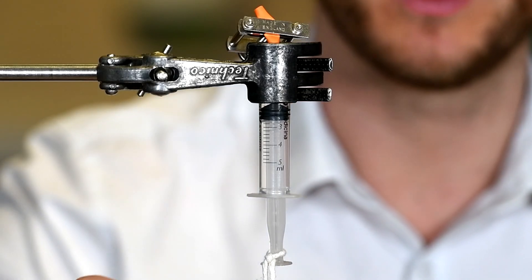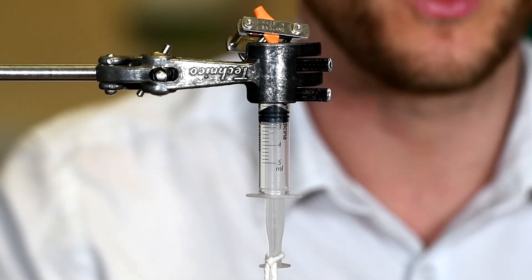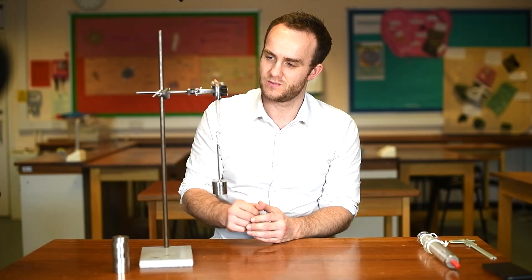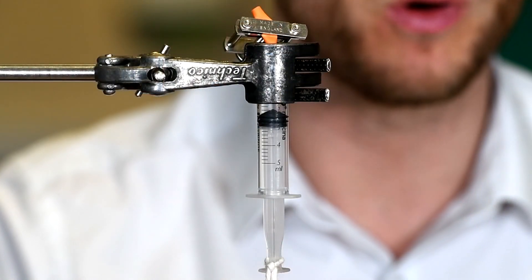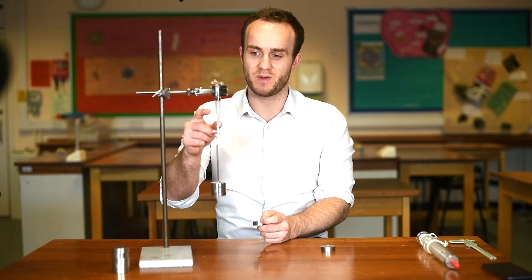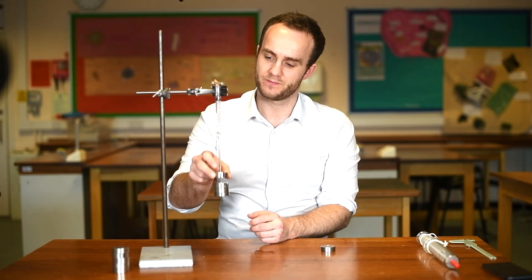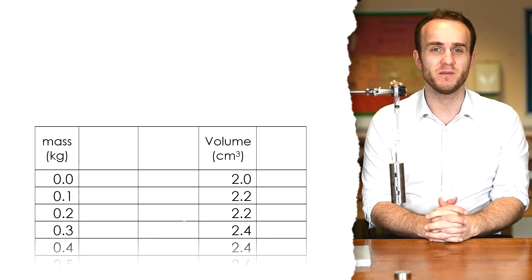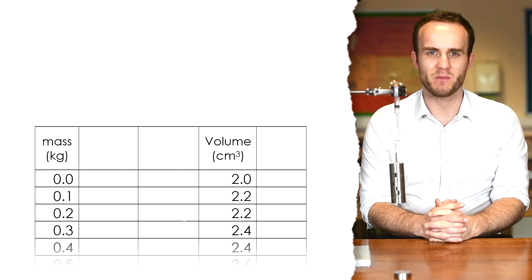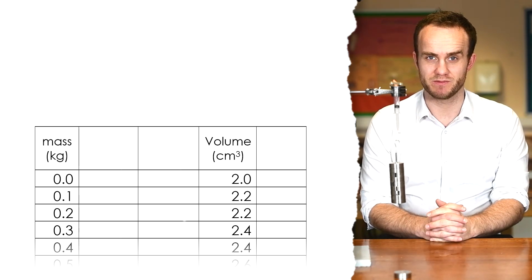Let's add another 100, so we have 200 grams. Not really enough change to observe. Let's have 300. I can see that's 2.4 centimeters cubed. I'm just going to keep adding masses until I get to basically the bottom of my markings on the syringe. Now this is one of those experiments that you might want to think about doing repeats for, because there is a fair amount of random error in this. But I'm just going to go with my one set of results for now.